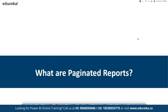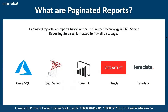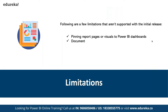We are also going to discuss paginated reports as part of Power BI. Paginated reports are based on RDL report technology from SQL Server, used as part of reporting services and formatted to fit well on a page. Data sources include Azure SQL, SQL Server, and Power BI itself. There are certain limitations — for example, you cannot pin paginated reports to a Power BI dashboard, document maps are limited, drill-through reports are not available, and shared data sources and datasets are also restricted.